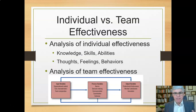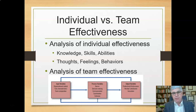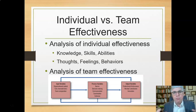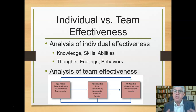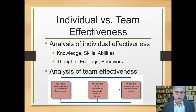When we look at individual effectiveness, it's a lot simpler — we're only dealing with one person. We might hire somebody because of their knowledge, skills, and abilities: what they're able to do, what they've learned, what they know how to do. When we put them in an organizational context, we look at what they actually do. We measure their behavior. Do they achieve their goals? Do they do what they're supposed to do? Do their thoughts and feelings contribute to the well-being of people around them? It's pretty straightforward.